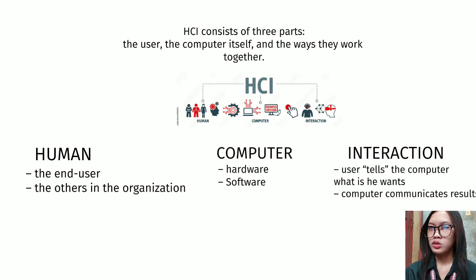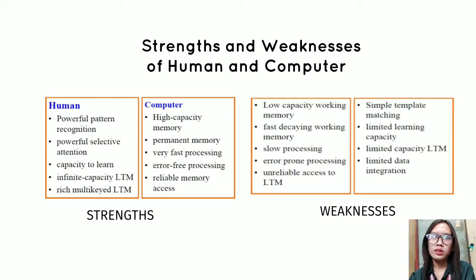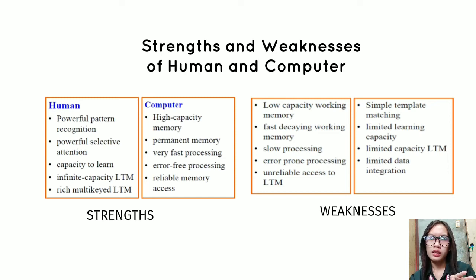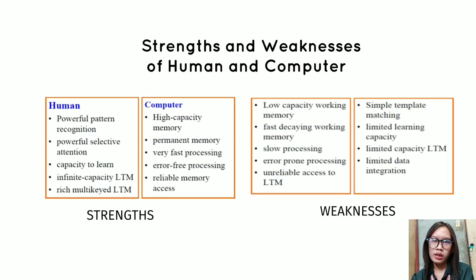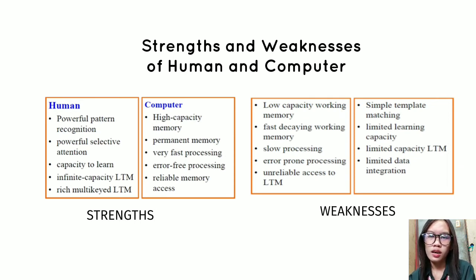Regarding the strengths and weaknesses of humans and computers: the strengths of humans are powerful pattern recognition, powerful selective attention, capacity to learn, infinite capacity long-term memory (LTM), and rich multi-modal LTM. The weaknesses of humans are low capacity working memory, fast-decaying working memory, slow processing, error-prone processing, and unreliable access to LTM.